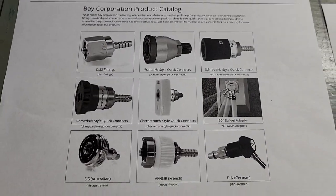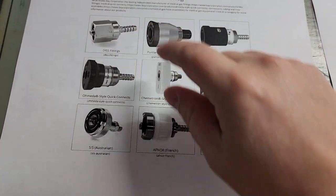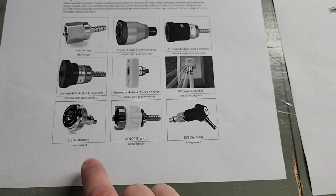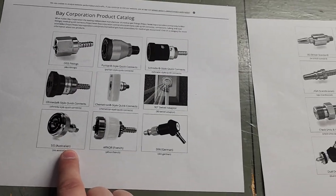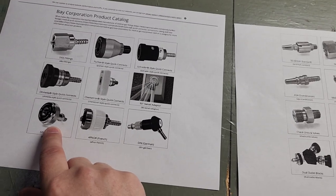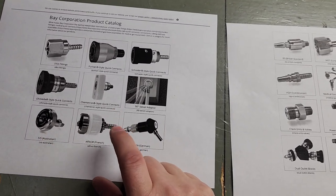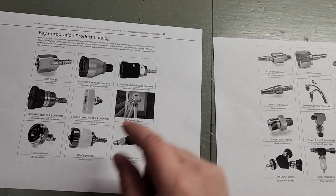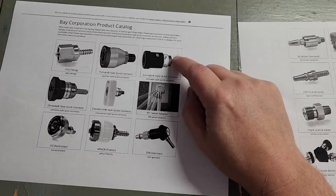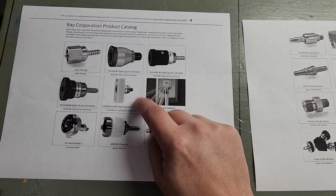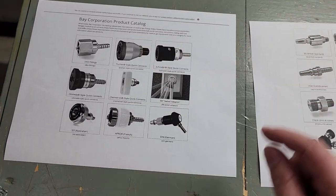Some of these fittings you'll see very commonly: DIS fittings, Ohmeda fittings—a lot of hospitals use those. Some use the stainless steel that comes on European equipment. Schrader style—a lot of hospitals still use that, it's an older style. Chemetron, Puritan—you might see those.